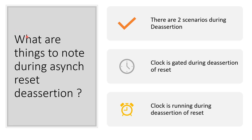We saw in the previous slide the difference between a synchronous and asynchronous reset. What are the things to note during an async reset? For a flip-flop with asynchronous reset, assertion of reset resets the flip-flop asynchronously. The de-assertion of reset leaves the output of the flip-flop unchanged — the state of the flip-flop will change only on the arrival of the next clock pulse.